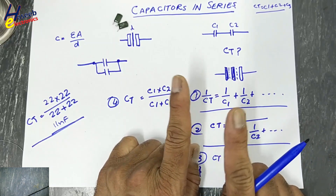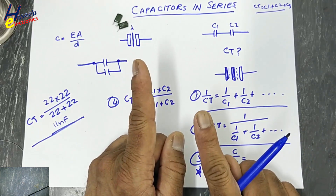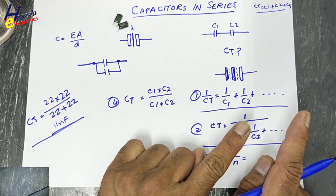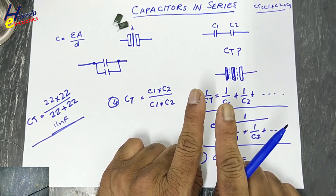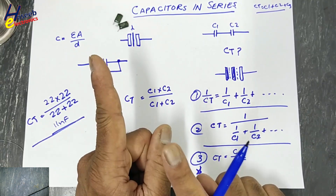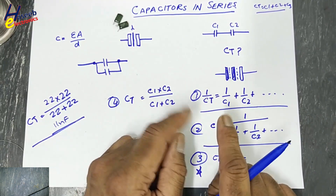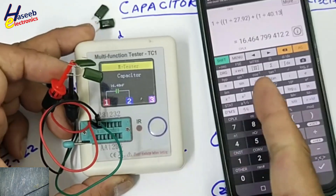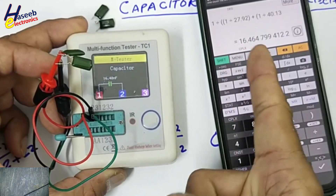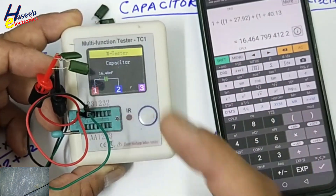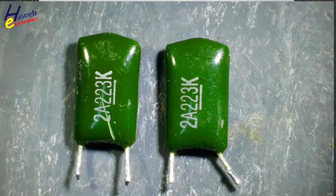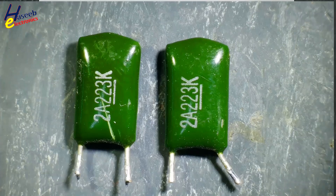In series, voltage value will increase and capacitance will decrease. In parallel, voltage value will remain same and capacitance will increase. What will happen if we connect these two capacitors in series?